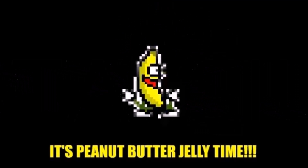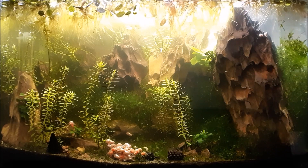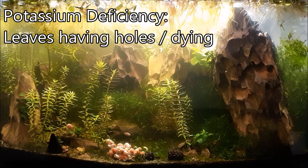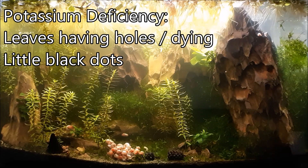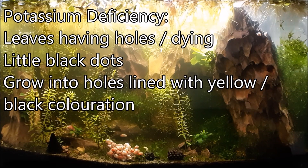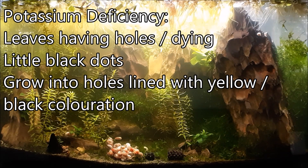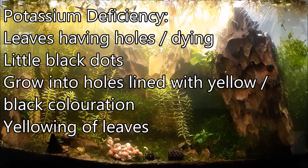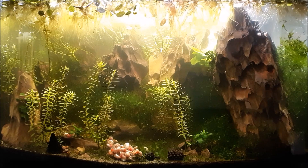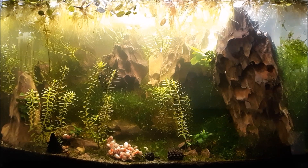Next up is potassium. Typical signs of a potassium deficiency are leaves developing holes or dying — these start as little black dots on the leaf that grow into visible holes surrounded by a black outline. Similar to the nitrogen deficiency, the leaves might also turn yellow. Yellowing leaves is actually a pretty generic symptom of a lot of these nutrient deficiencies, so you need to look at the other details — for potassium, it's the combination of yellowing and those black dots.